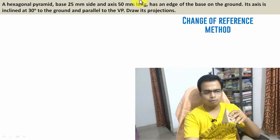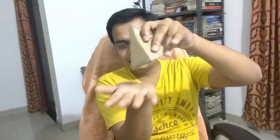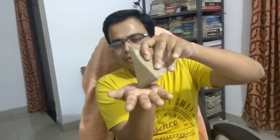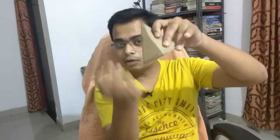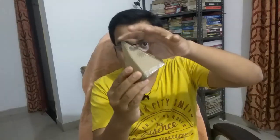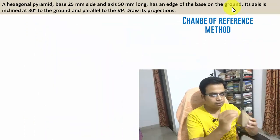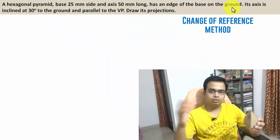Now there is a condition given in the problem: it has an edge of the base on the ground. This base edge is in absolute contact with the ground. Out of the six base edges, one is in contact, meaning the remaining five base edges are up in the air. In that process, the axis is going to make some angle with the horizontal plane — its axis is inclined at 30 degrees to the ground. Ground refers to the horizontal plane.